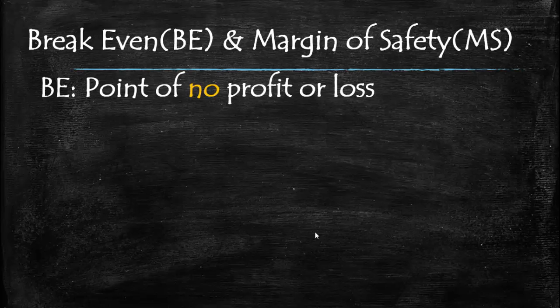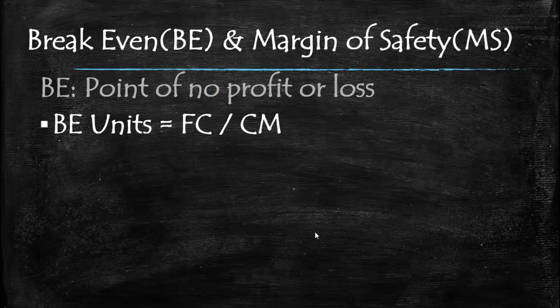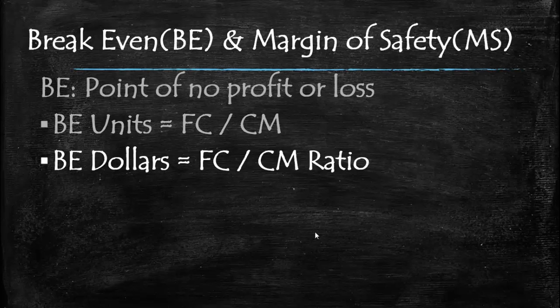Break-even analysis identifies the point at which there is no profit but also no loss. Break-even may be computed based on the units that need to be sold or based on the dollars of sales. The formula is fixed cost divided by the contribution margin per unit, or fixed cost divided by the contribution margin ratio.